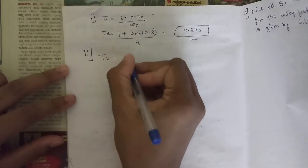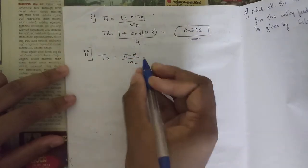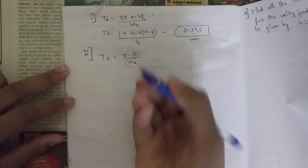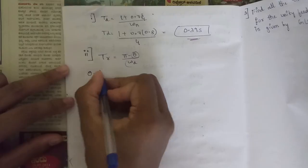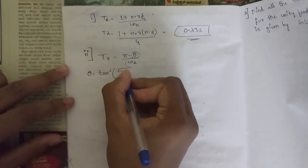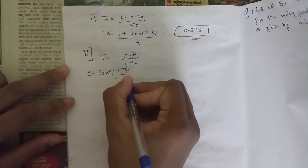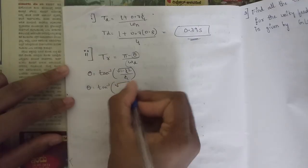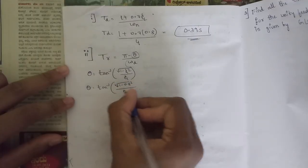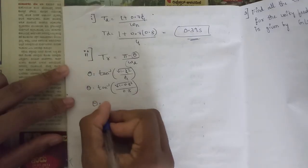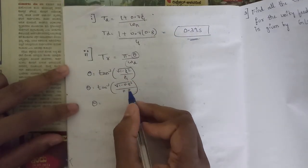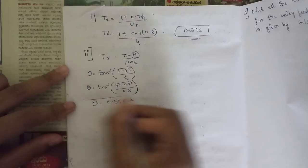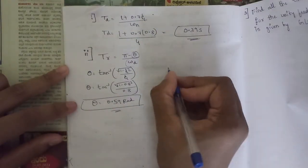For rise time tr, the formula is (π − θ) / ωd, which requires θ and ωd. θ = tan⁻¹(√(1 − ζ²) / ζ) = tan⁻¹(√(1 − 0.8²) / 0.8). In radian mode, θ = 0.59 radians.